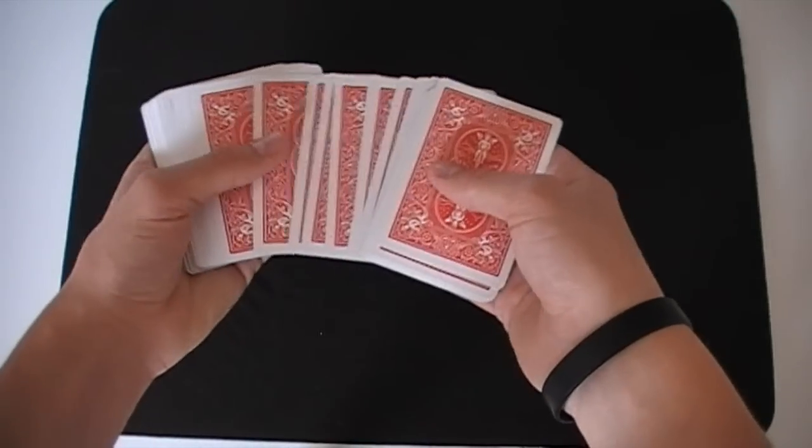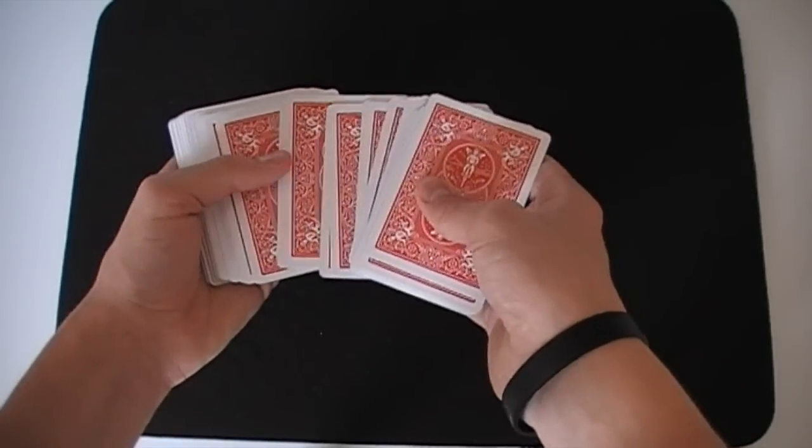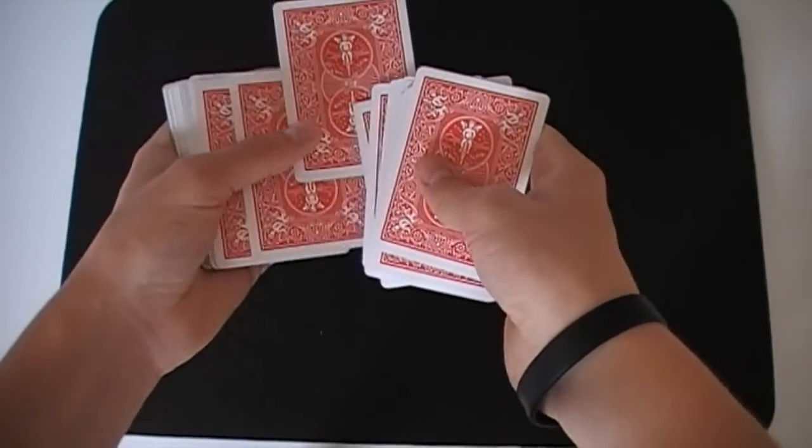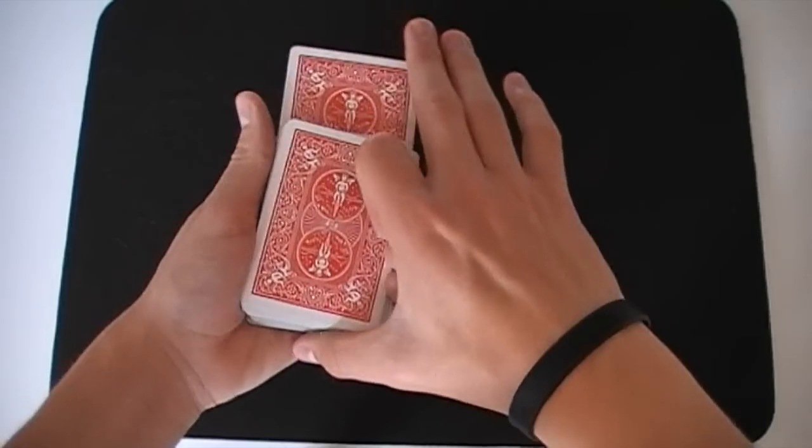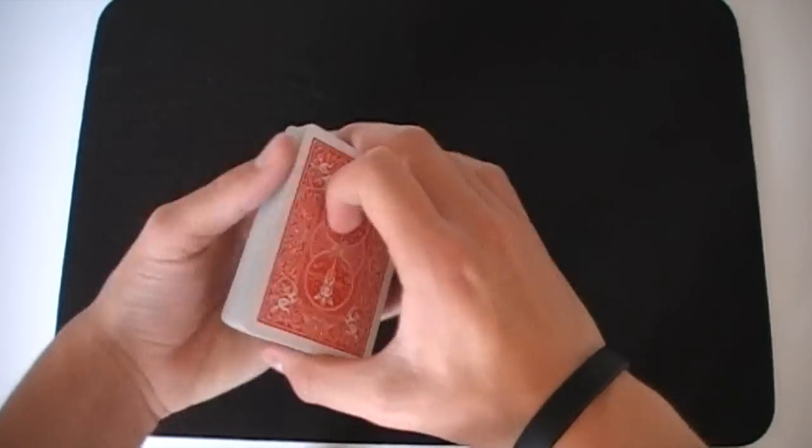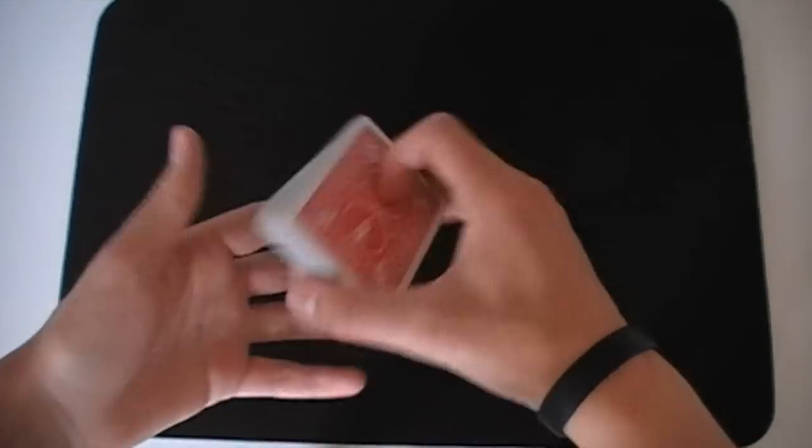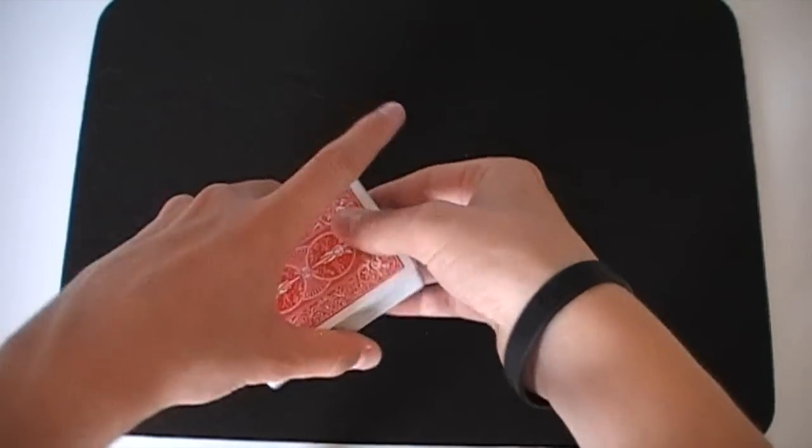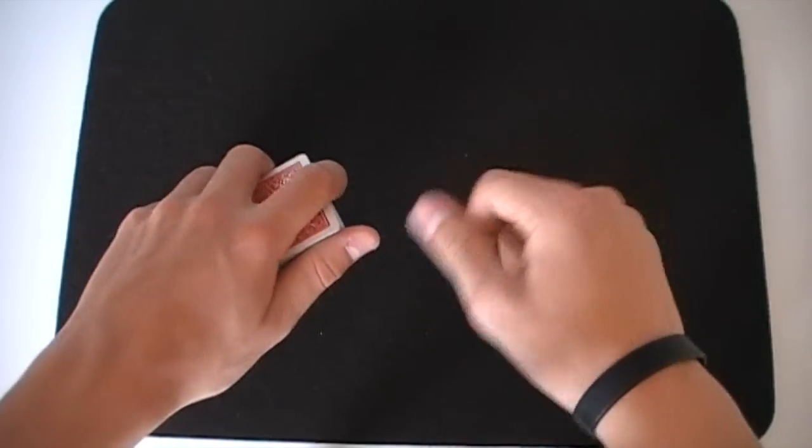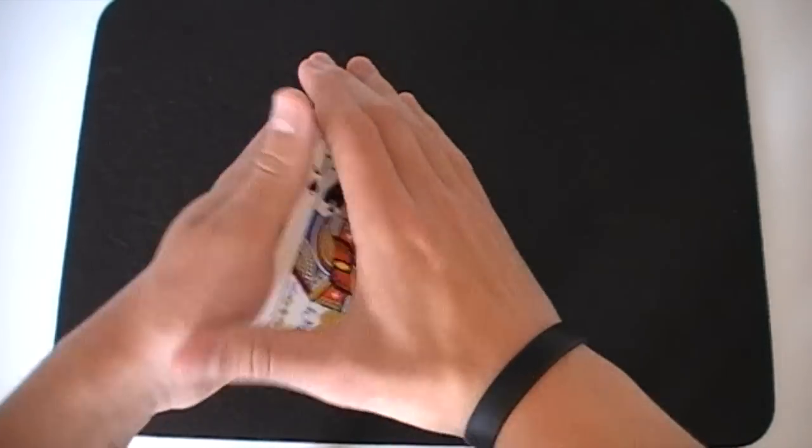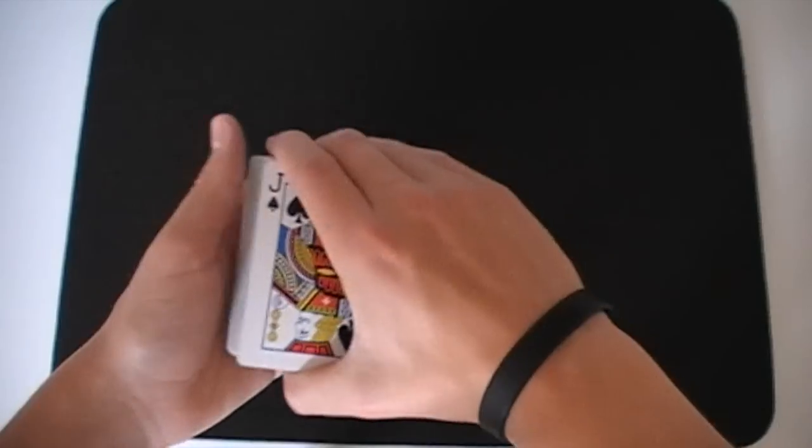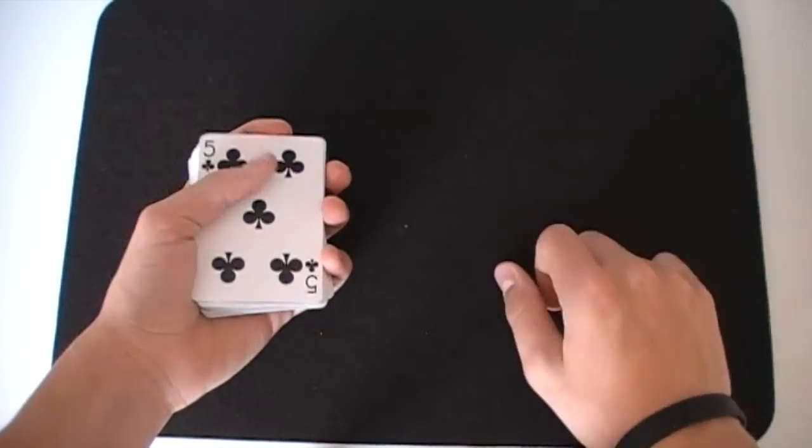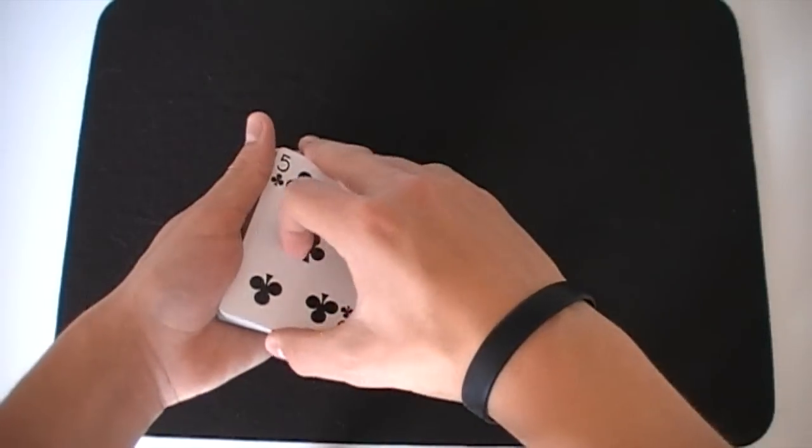If you haven't seen the video on that control I'll leave a link in this top right angle on the screen. But basically you just take a card—let's say this one right here, the five of clubs—and then it apparently gets lost into the center of the pack when actually it's on the bottom. So if you haven't learned that control go and check that video out, but once you've got that card on the bottom you can then switch grips, get that card into a palm, and then just go straight into the color change.